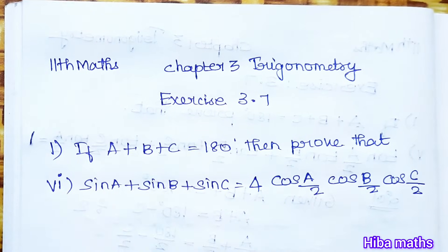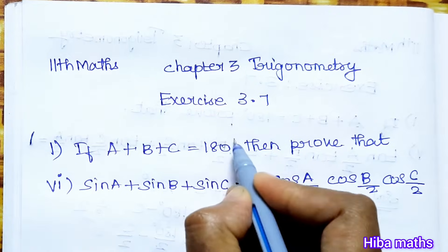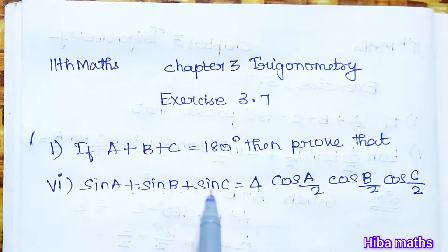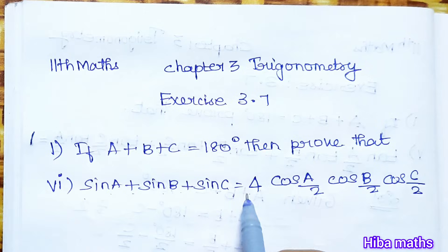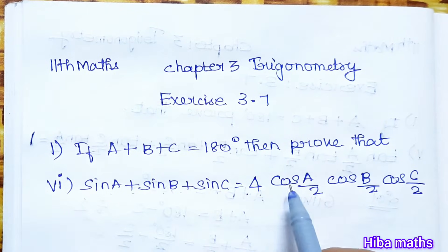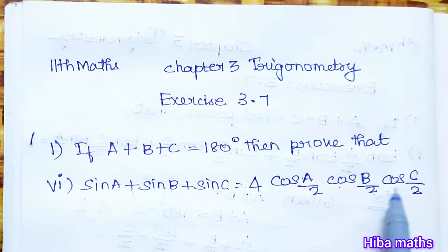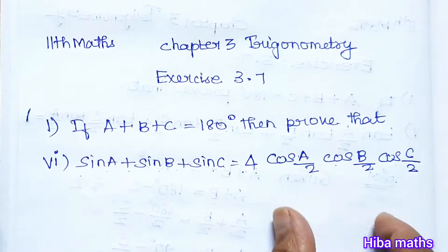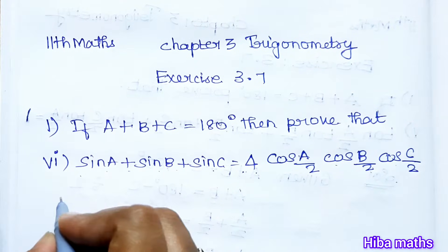The condition is: a plus b plus c is equal to 180 degrees. Then prove that sin a plus sin b plus sin c is equal to 4 times cos(a/2) · cos(b/2) · cos(c/2). So we start with the LHS.